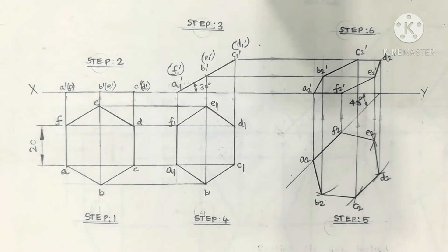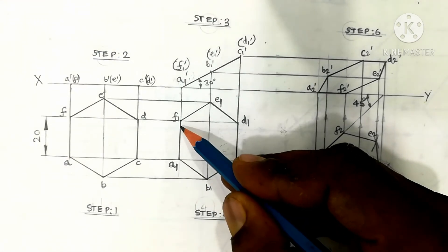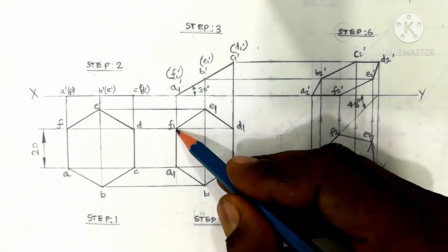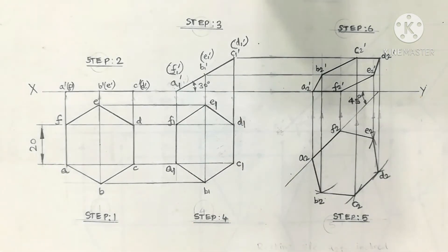This is a question on procession of planes. The hexagonal plate of side 20mm rests on one of its sides — we consider AF as the resting side. AF rests on the HP, and the surface of the lamina is inclined at 30 degrees to the HP. The first step is the simple position.